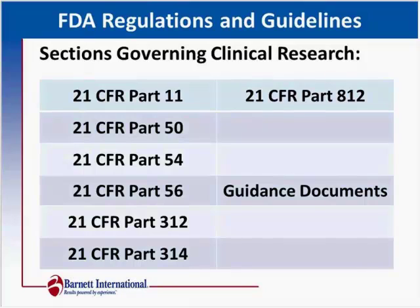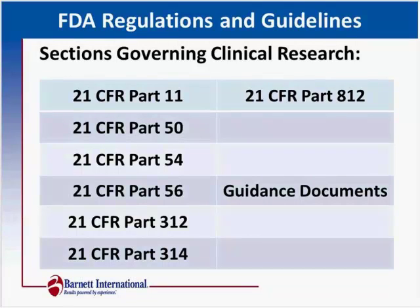Part 812 is the device section, and it identifies the essential documents specific to device management. One section not referenced in this slide is Section 3 — a relatively new section to the Code of Federal Regulations, specific to combination products. For example, an inhaler for an asthmatic is a combination product because it has the device that delivers the drug and the actual drug inserted into the inhaler. Section 3 contains specifics about combination products.